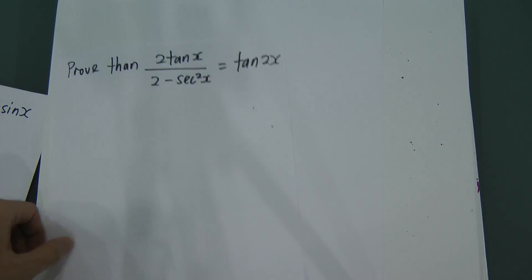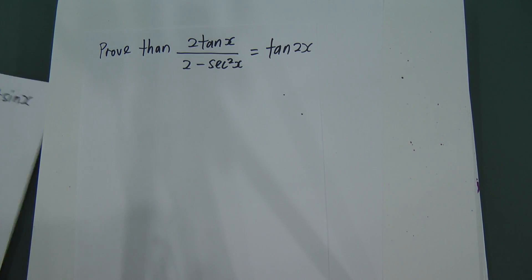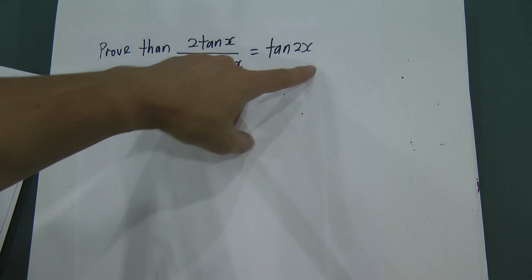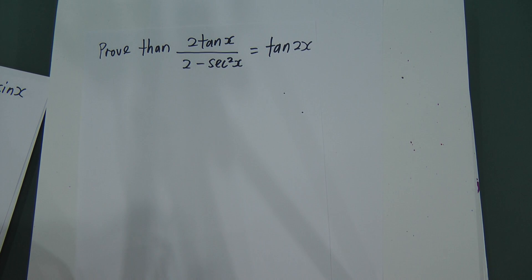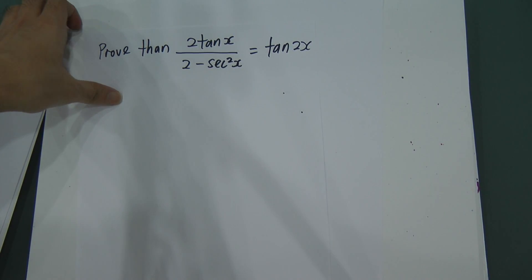Today I'm going to use a very quick way to explain about trigonometric functions. This lesson is more on the identity part, where most of the time you will be asked to prove that an equation equals something like tangent 2x. So today I will only explain the trigonometric function identity part, as requested by most people on my Facebook page.